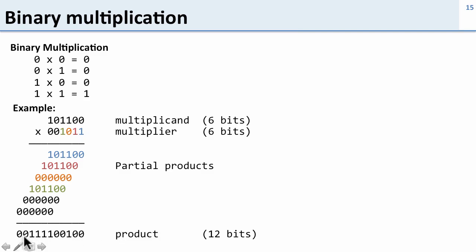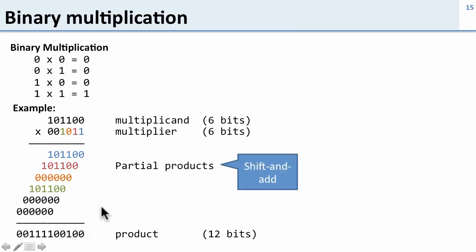Finally we take all these partial products and add them up to get our final value. Note our final value here is not 6 bits — it's 12 bits. You've got to take out the right 6 bits when you're done to get the right result. So what did we do? We shifted over and added — shift, add, shift, add. That's how you do multiplication in binary.